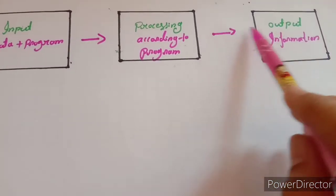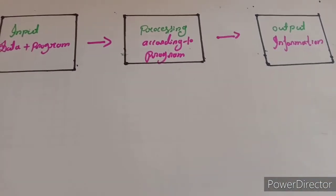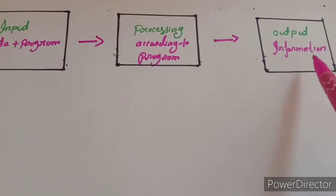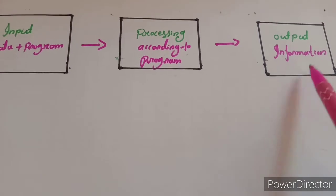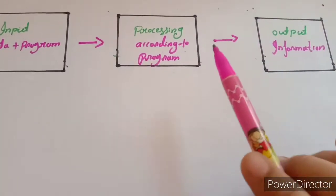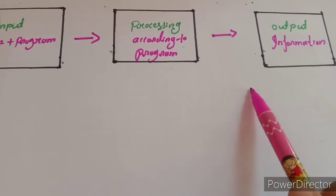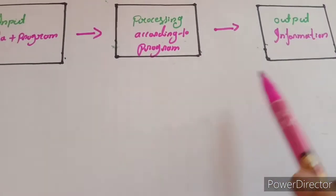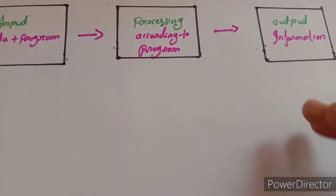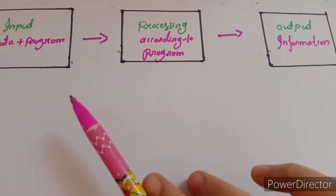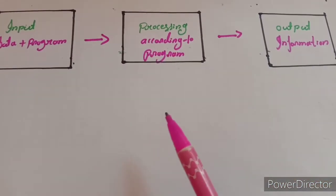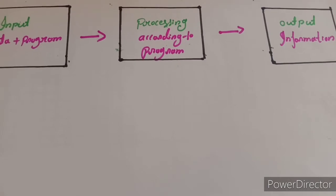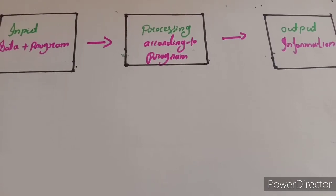The next one is output. Output is information. Information generated by processing data is called output. It is displayed by the monitor or printer. This means the computer processes input data with the help of a program to generate information as output.